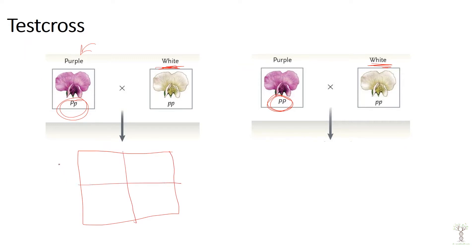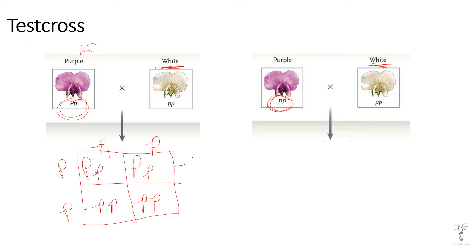If this purple pea plant has one dominant and one recessive allele and we cross it with two recessive alleles, we can get heterozygous offspring and homozygous recessive offspring. So 50% of the offspring will be purple and 50% will be white if the parent is a heterozygous purple pea plant.